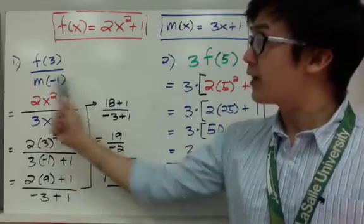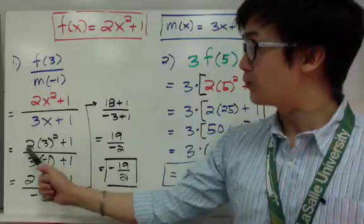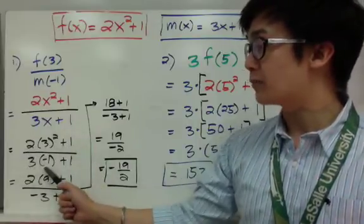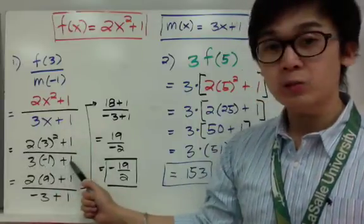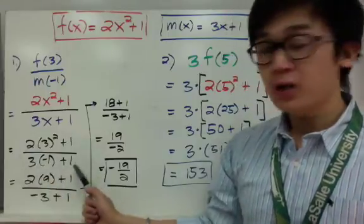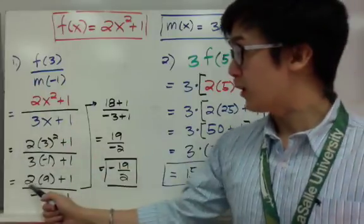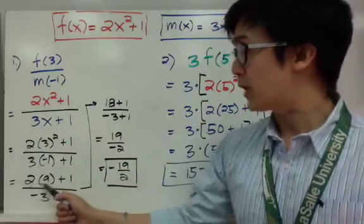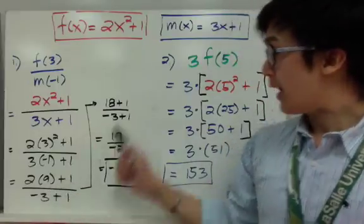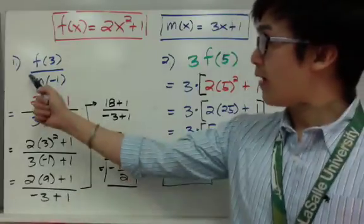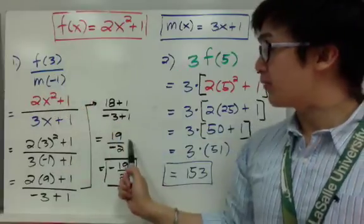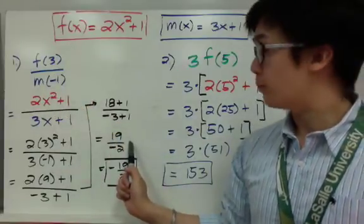Simplifying this fraction, I'll have 2 times 3 squared plus 1, all over 3 times negative 1 plus 1. Using order of operations, that gives 2 times 9 plus 1, all over negative 3 plus 1. So f of 3 all over m of negative 1 gives you 19 all over negative 2.